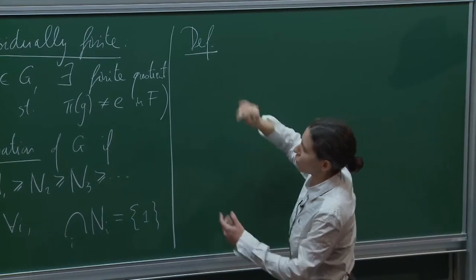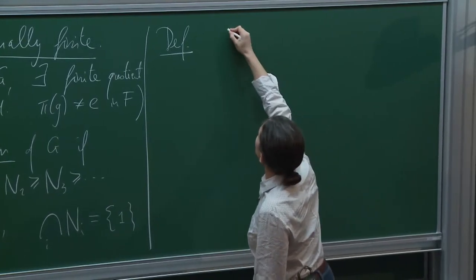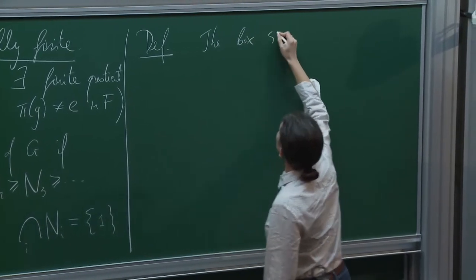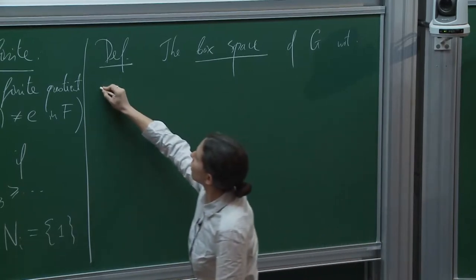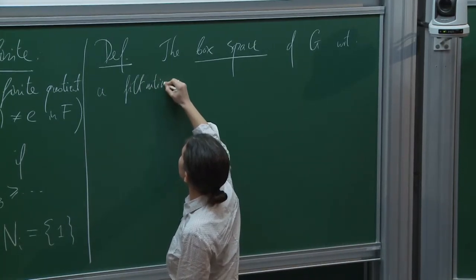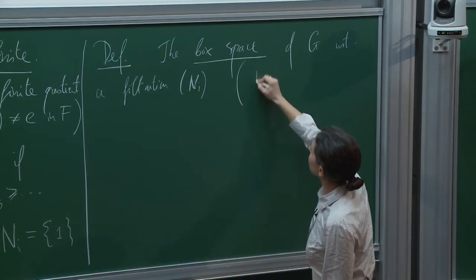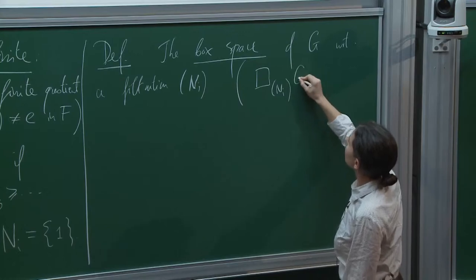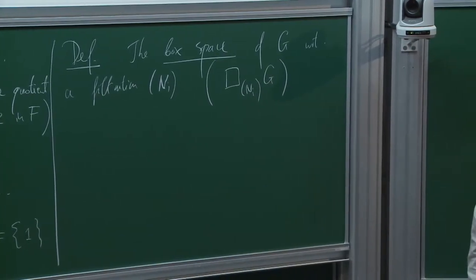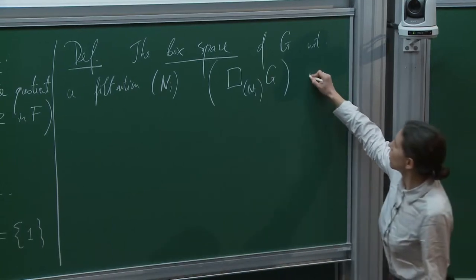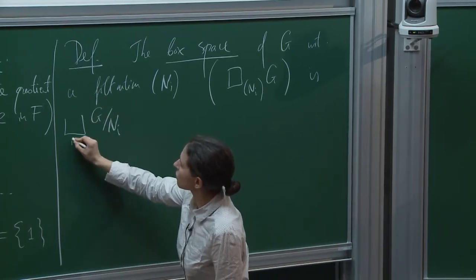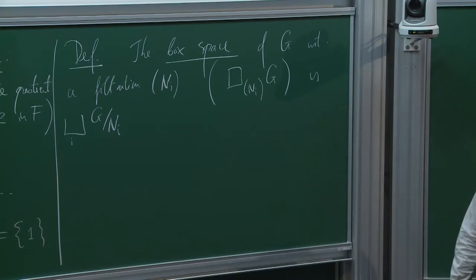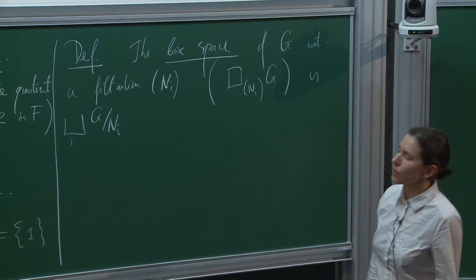So G is residually finite and finitely generated. The box space of G with respect to a filtration, written with this box notation, is the following object. As a set, it's just the disjoint union of these finite quotients of G by the various subgroups N_i. We want it to be a metric space — it's going to play the role of a Cayley graph for us.